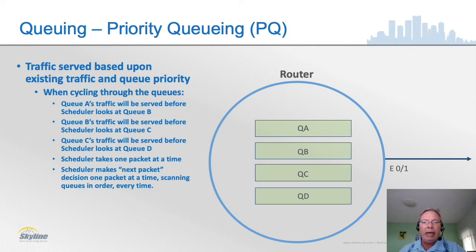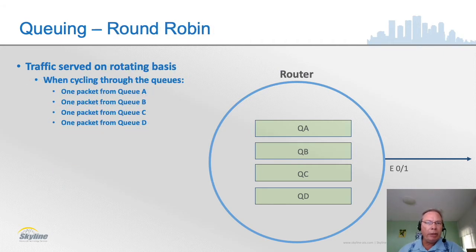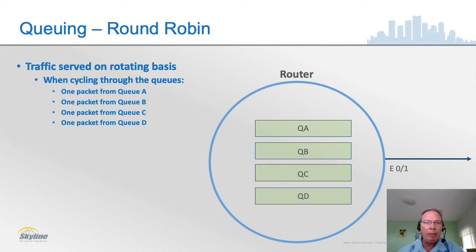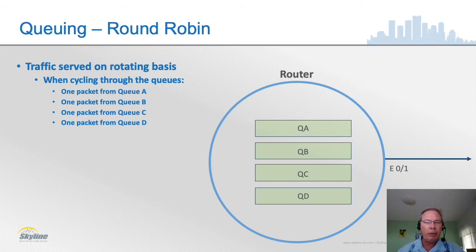Although priority queuing is better than FIFO, it's not exactly perfect. The next tool is round robin queuing. As queuing progressed, after priority queuing they thought of something called custom queuing — which is now essentially extinct — but custom queuing is very much the same concept as round robin queuing. With round robin queuing, when it's time to take a packet, you simply take packets in sequence from each of the queues.